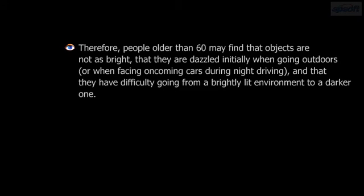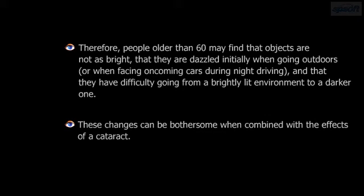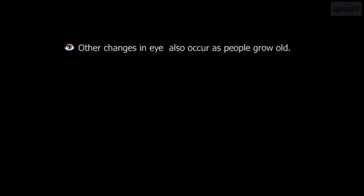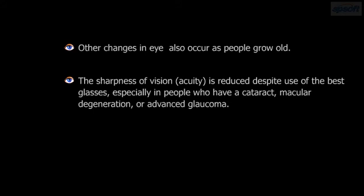Therefore, people older than 60 may find that objects are not as bright, that they are dazzled initially when going outdoors or when facing oncoming cars during night driving, and that they have difficulty going from a brightly lit environment to a darker one. These changes can be bothersome when combined with the effects of a cataract. Other changes also occur as people grow old; the sharpness of vision, or acuity, is reduced despite use of the best glasses, especially in people who have a cataract, macular degeneration, or advanced glaucoma.